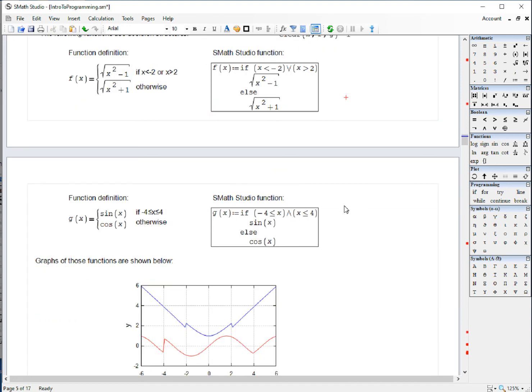Here's another expression, G of X is equal to sin of X if X is within minus 4 and 4, which will be represented with this AND statement. And if it is true, you get sine of X, else you get cosine of X.